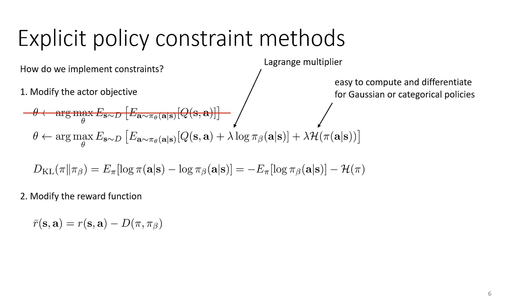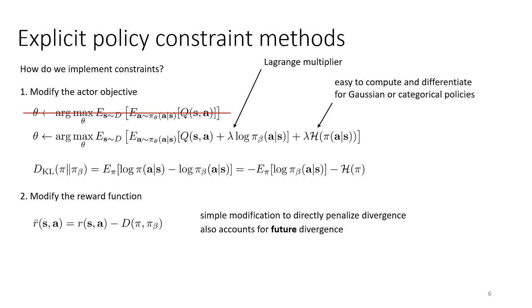Another approach is to directly modify the reward function — simply subtract a penalty determined by the divergence of your choice, such as KL divergence or MMD. This works a little differently: it penalizes divergence directly so the policy avoids actions that incur large divergence now, but also avoids actions with low divergence now that lead to higher divergence later, which can be quite desirable. This approach has slightly different theoretical properties and can actually work better. But generally from my experience, both approaches don't work all that well.